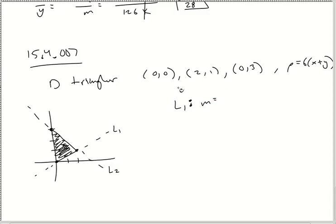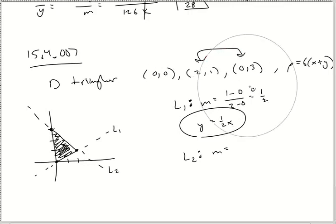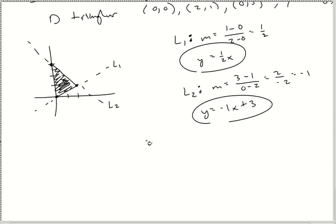For Line 1, using points (0,0) and (2,1): slope = (y2−y1)/(x2−x1) = positive 1/2, and the y-intercept is at 0. So y = ½x. For Line 2, using points (2,1) and (0,3): the slope is going down, so (3−1)/(0−2) = 2/−2 = −1. The y-intercept is at 3, so y = −x + 3. Line 2 is on top, Line 1 is on the bottom.